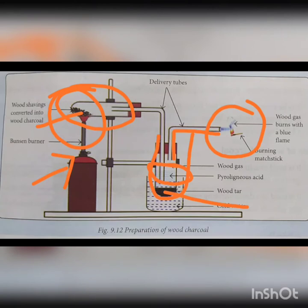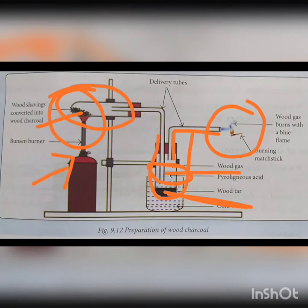Thus, we conclude that destructive distillation of wood yields wood charcoal — the black solid residue; wood tar — the black sticky liquid; pyroligneous acid — the colourless liquid; and wood gas — a combustible gas.